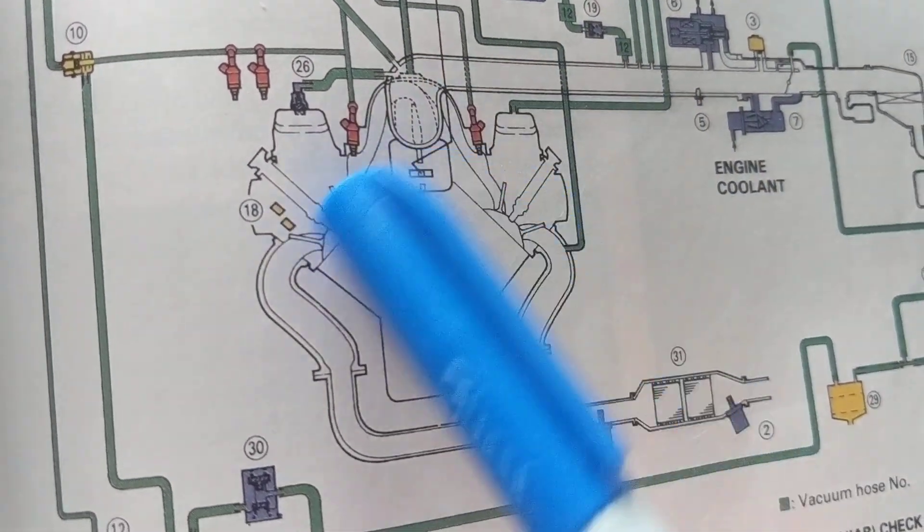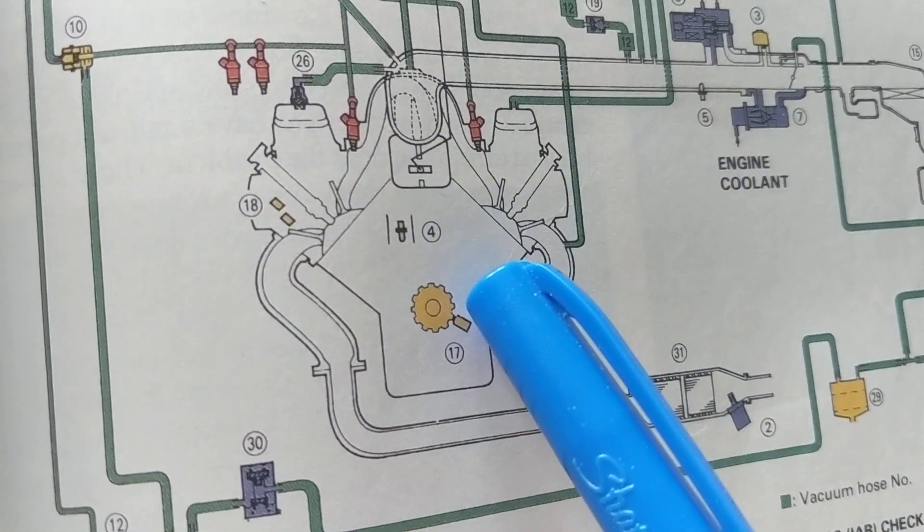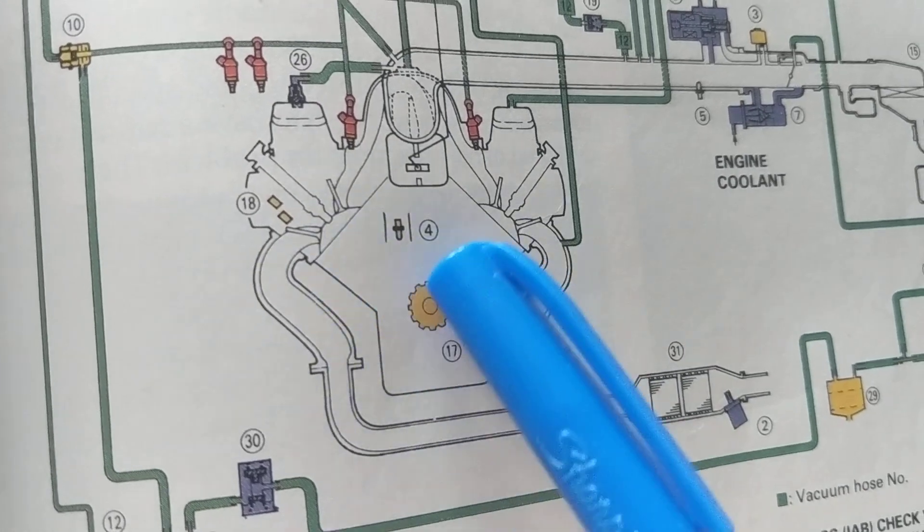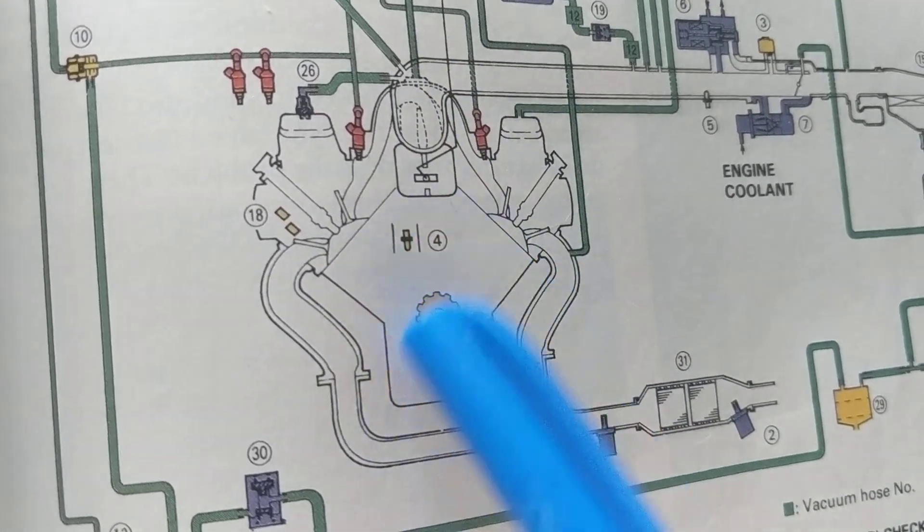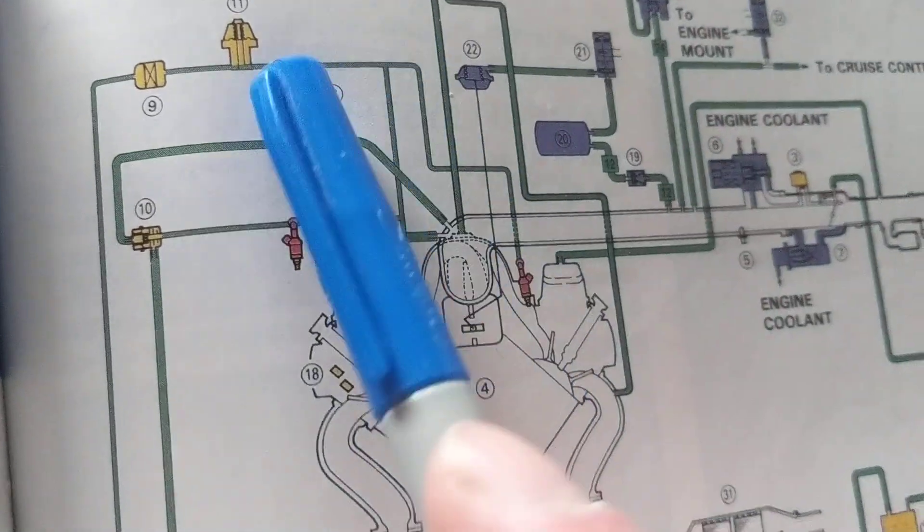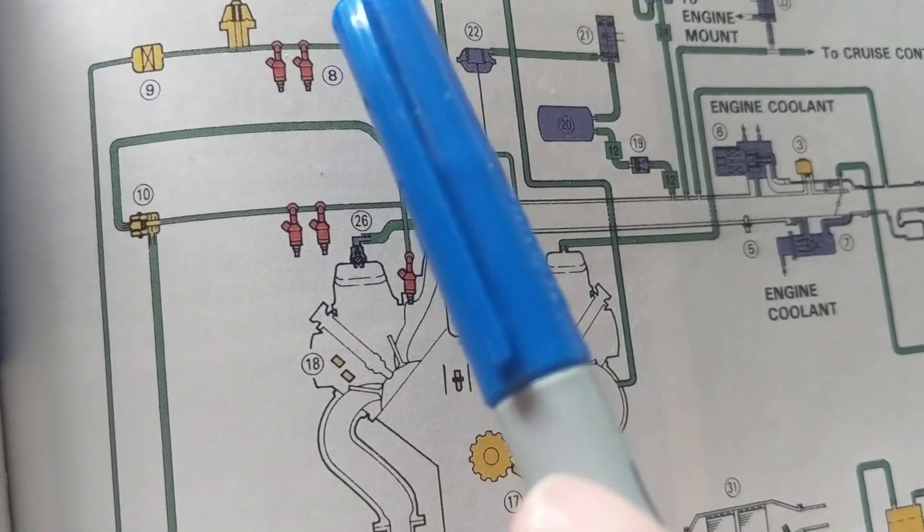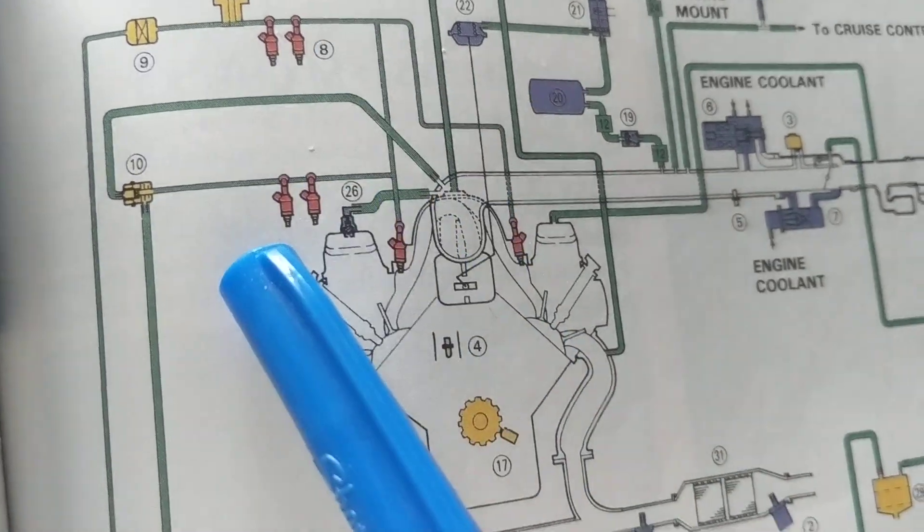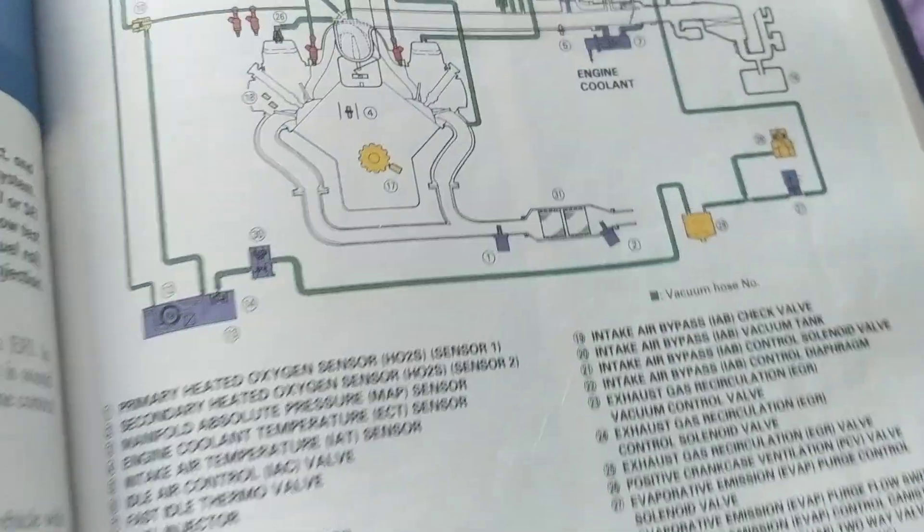If you have less oxygen content coming out, that means you have more fuel, you're running rich, you have too much fuel. The computer says I'll take away fuel. How? By keeping these fuel injectors on longer or shorter time.